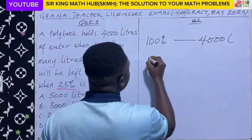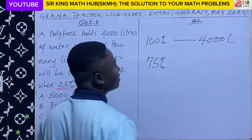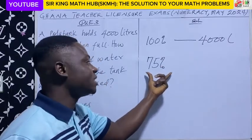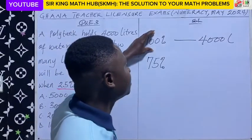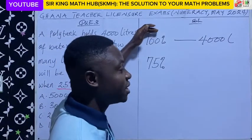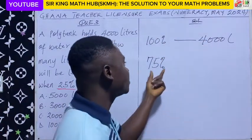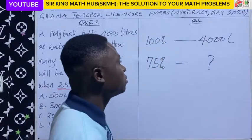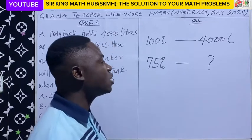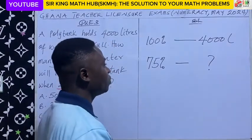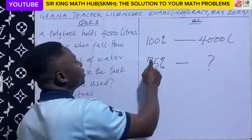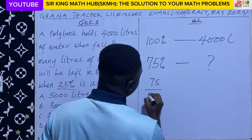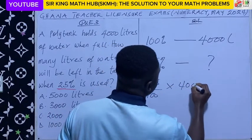The remaining percentage will be 75%. We want the quantity that corresponds to this 75%. If the original quantity — 100% — is 4,000 litres, then 75% must also be equivalent to a certain quantity in litres. We can apply proportion: 75 divided by 100 times 4,000 litres.